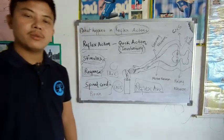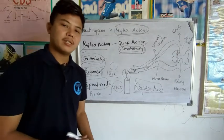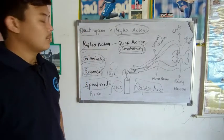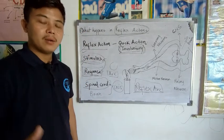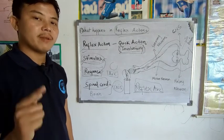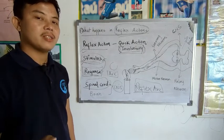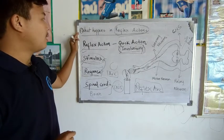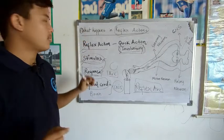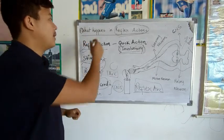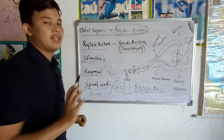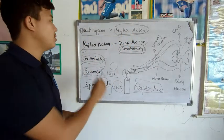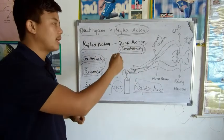Welcome students to Motivation online classes. Today we are going to study the second part of Control and Coordination, Chapter 7 of Science in CRT cluster. The topic is what happens in reflex action. Before understanding what happens in reflex actions, we will try to understand what a reflex action is.